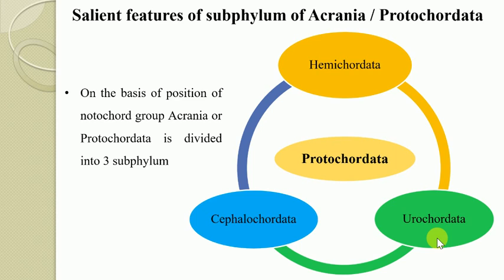On the basis of position of notochord, group Urcranata or Protochordata is divisible into 3 subphyla: Hemichordata, Urochordata, and Cephalochordata.